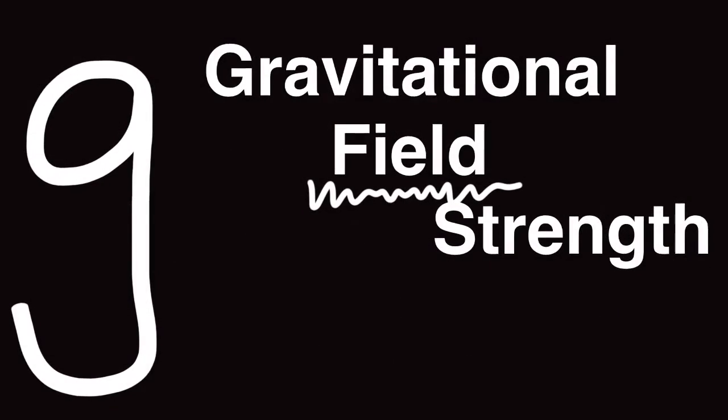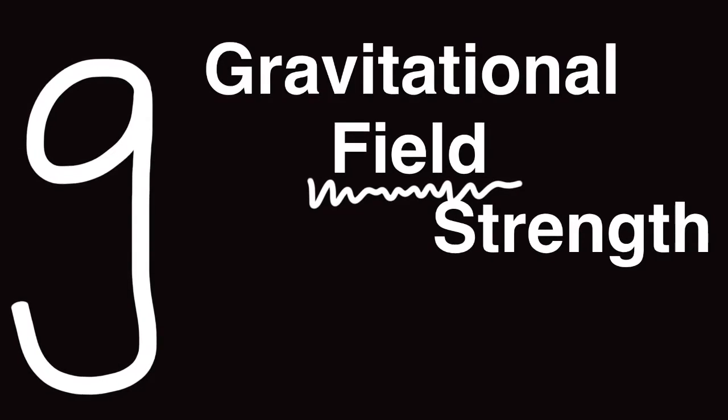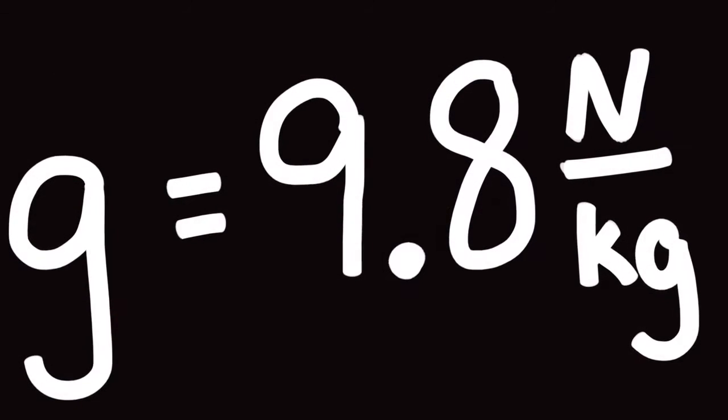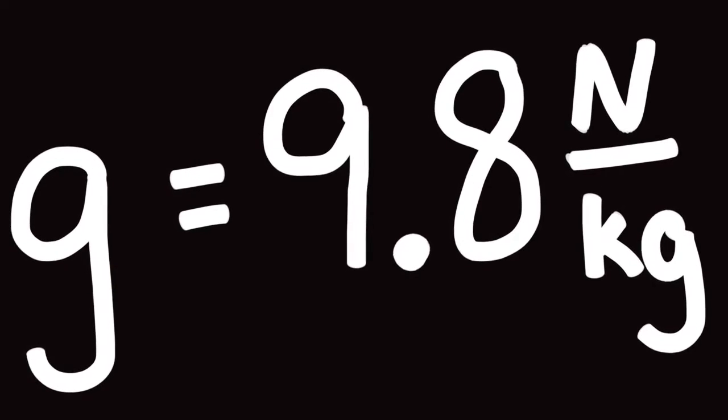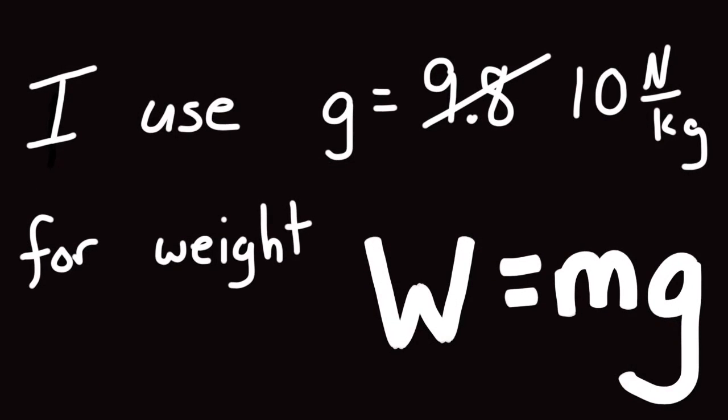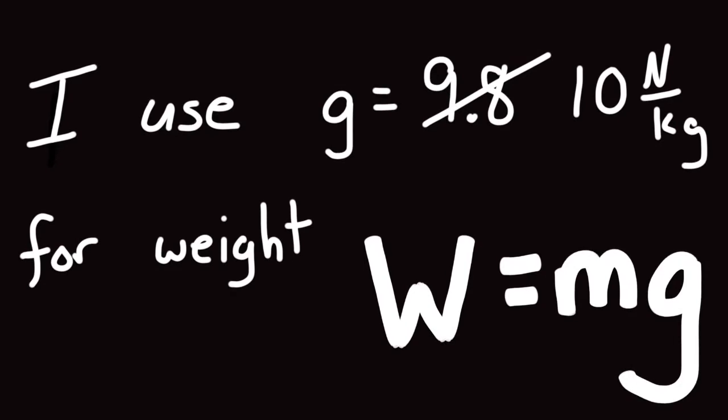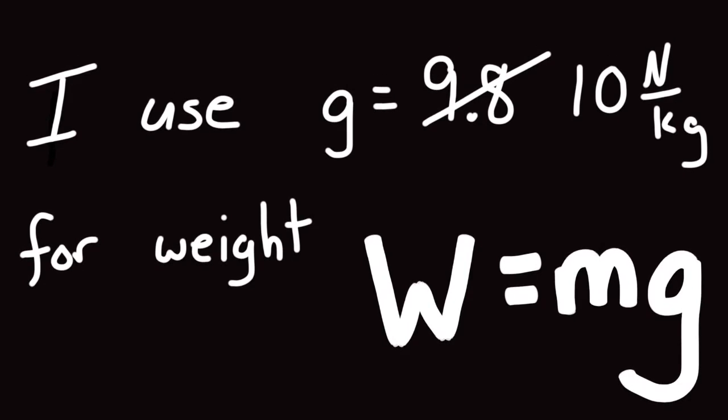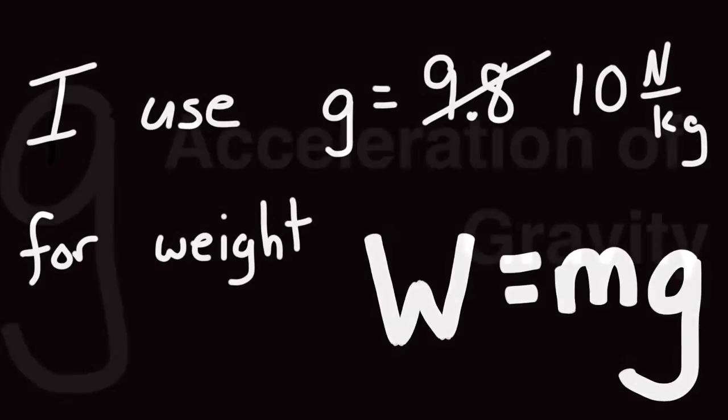So, little g is the gravitational field strength, and it has a value of 9.8 newtons per kilogram for W equals mg. So, I will switch units in class depending on the situation. 10 newtons per kilogram when I'm dealing with the weight of an object, the gravitational force.